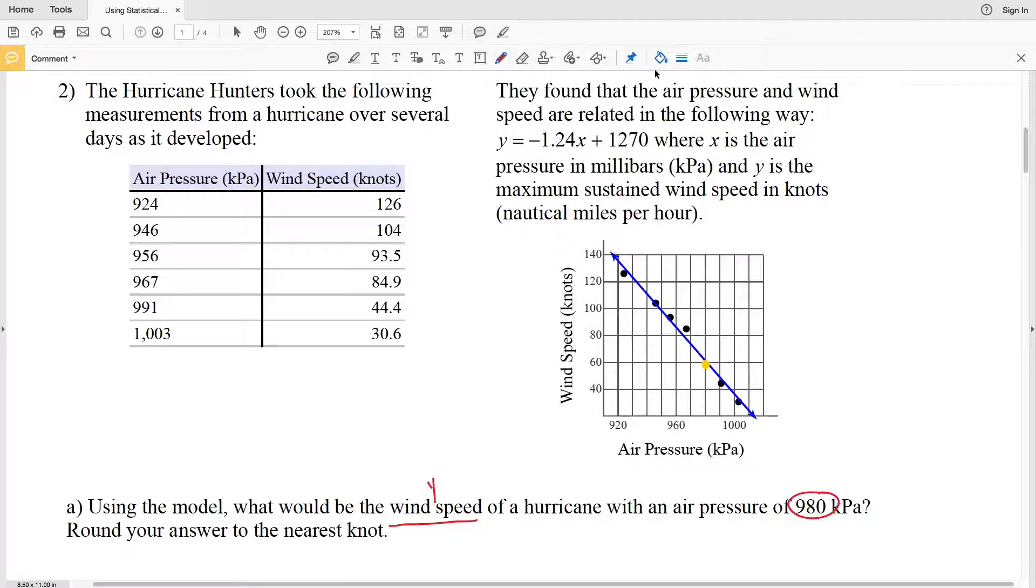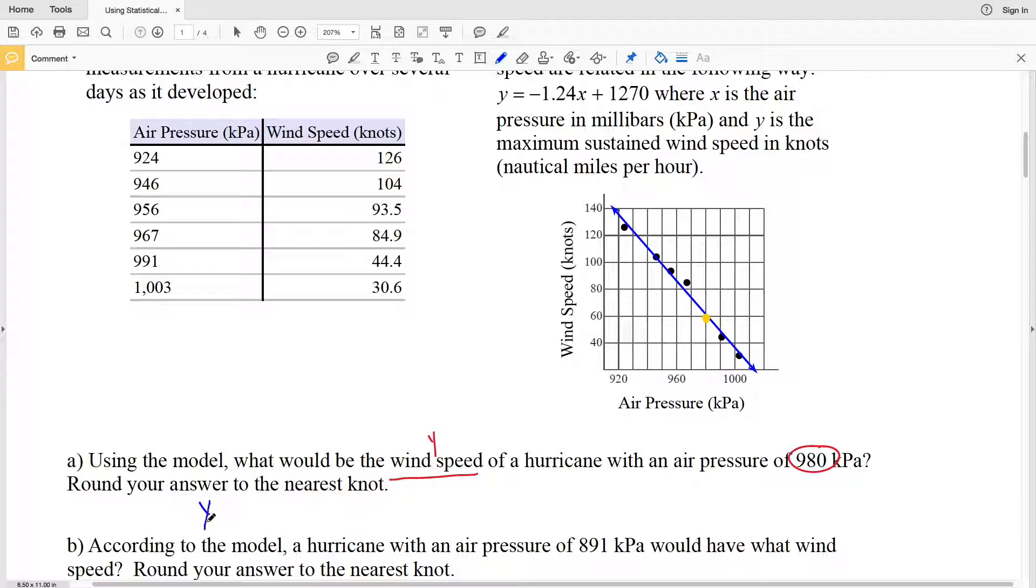The easiest way to do this to get a more accurate estimation is to plug in our X value into our line of best fit formula. We'll have Y equals negative 1.24 times 980 because that's our X value that we're given, plus 1270.